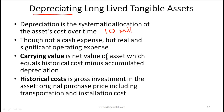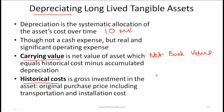Carrying value is the net value of an asset, which equals historical cost minus accumulated depreciation. You might see the terms carrying value, net book value, or historical cost. Historical cost is the gross investment in the asset — the original purchase price including any transportation and installation costs. For example, if the total cost you incurred was 10 million, that would be called the historical cost, or gross amount, or gross investment.